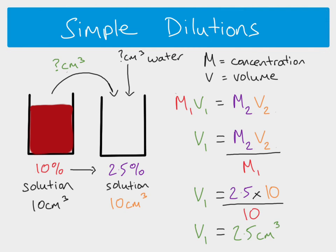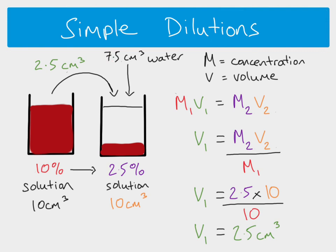The 10s cancel out, meaning the volume we need to transfer is 2.5 cm³. That means we need 7.5 cm³ of water, since 2.5 plus 7.5 gives us the 10 cm³ final volume we want. And that's how you calculate a simple dilution.